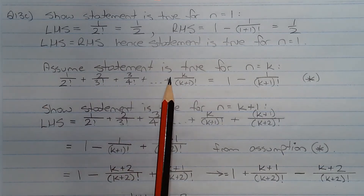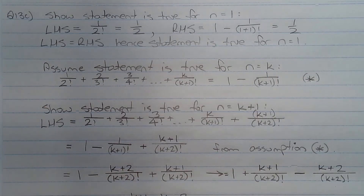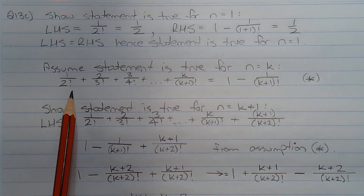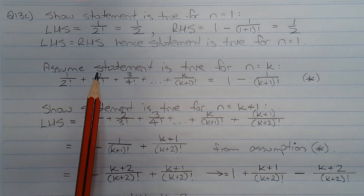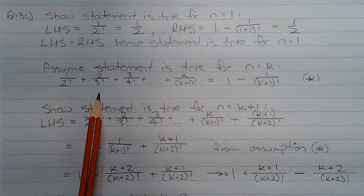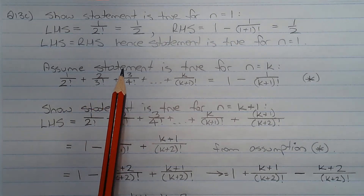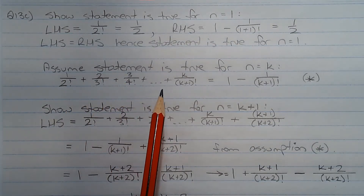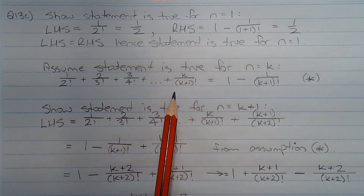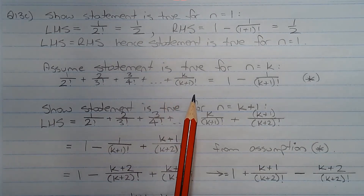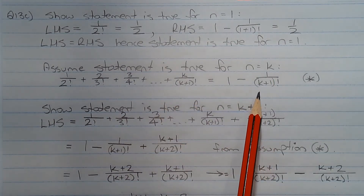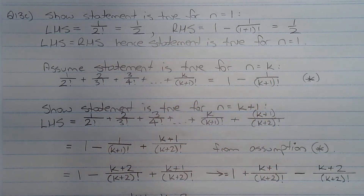Next we assume the statement is true for n equals k. In other words, 1 over 2 factorial plus 2 over 3 factorial plus 3 over 4 factorial plus dot dot dot plus k over k plus 1 factorial equals 1 minus 1 over k plus 1 factorial.